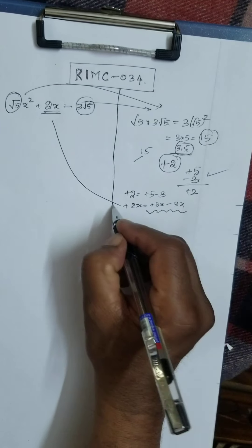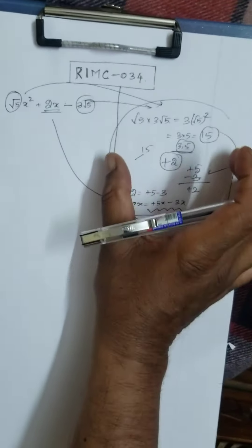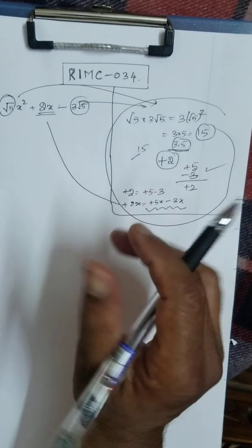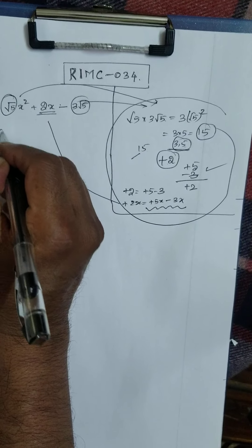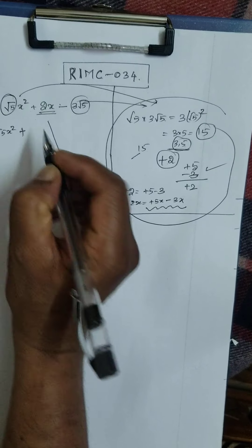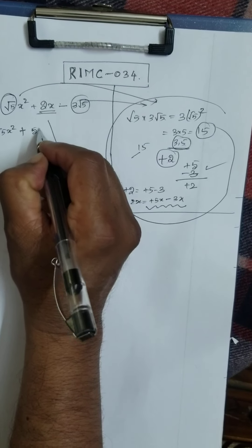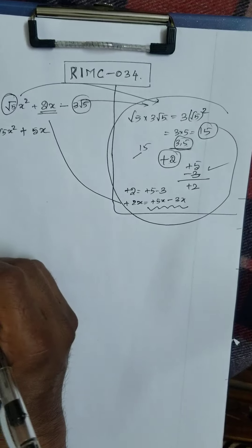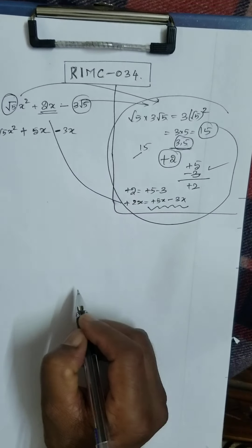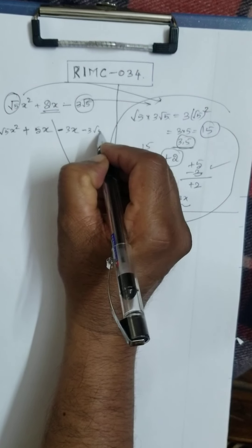You understood? All these things you have to calculate mentally. Therefore, the √5·x² — 2x can be replaced by 5x minus 3x — minus 3√5.